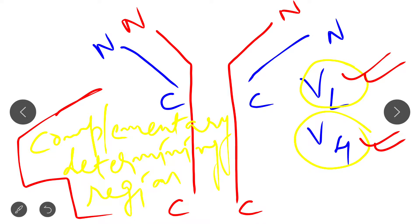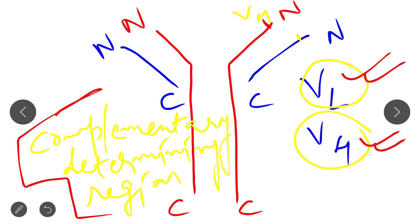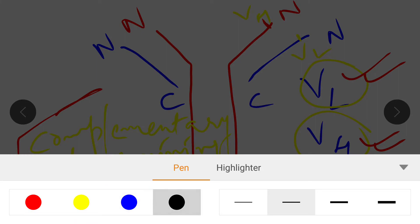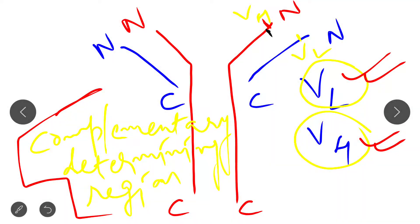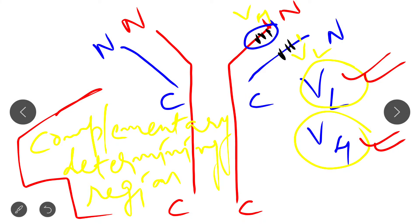If we imagine the variable region of the heavy chain (VH) and the variable region of the light chain (VL) and restrict each into three small regions — region one, region two, and region three — then these three small restricted regions are basically known as the Complementary Determining Region (CDR).